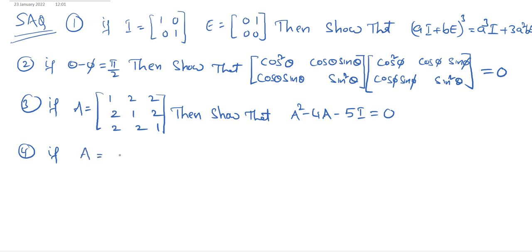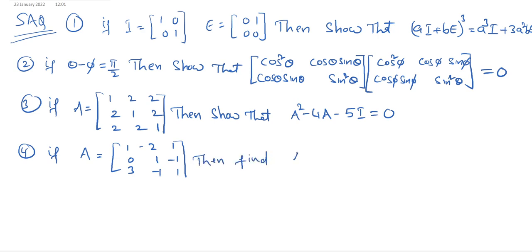Fourth question: if capital A is equal to [1, −2, 1; 0, 1, −1; 1, 0, 1], then find A³ − 3A² − A − 3I.